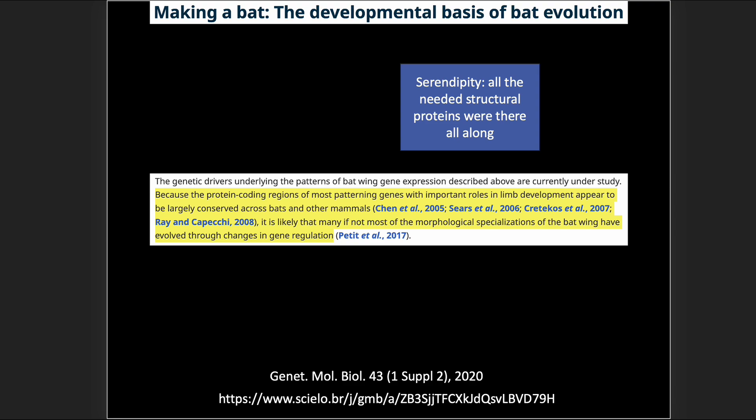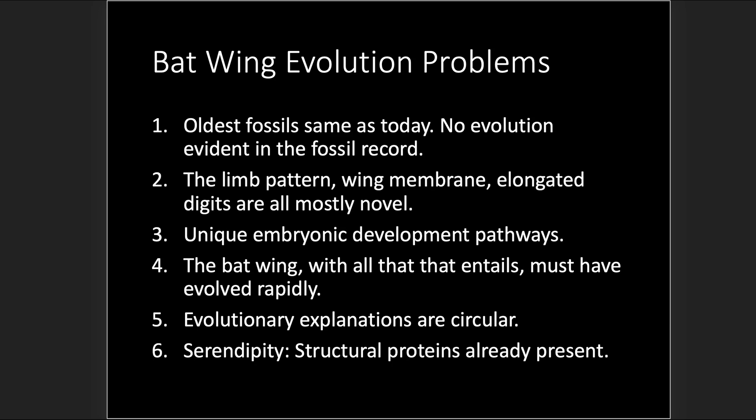But look at the serendipity being invoked. It's like a factory that makes bicycles and another factory that makes jet airplanes, and you find out they use all the same tools and raw parts — this bolt used for bicycles can also be used for jet airplanes, no new parts needed, just different regulation of the machines. How unrealistic would that be? If evolution is true, wow, what luck — it just happened to evolve all these genes for making rodents, and then voilà, they all worked for bats as well. Problem number six: serendipity. Structural proteins already present.